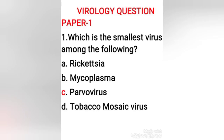First question: which is the smallest virus among the following — Rickettsia, Mycoplasma, Parvovirus, Tobacco mosaic virus? The right answer is option C, Parvovirus.